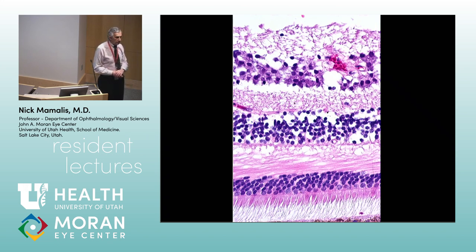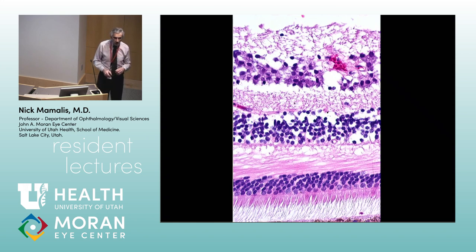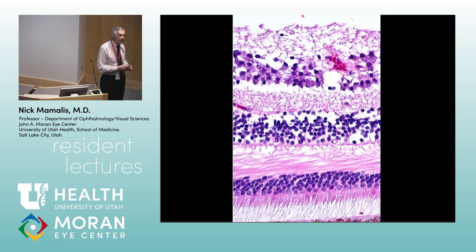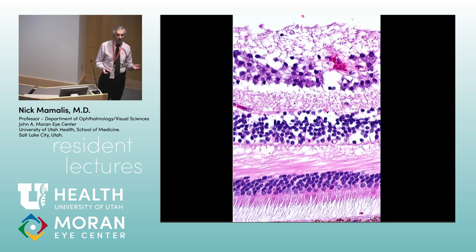Mueller cells are like microglial scavenger cells, but they also give structural support. Their cell bodies live in the inner nuclear layer but their processes extend all the way up and all the way down through the retina. There's also what some call the outer limiting membrane — near the cell bodies of the rods and cones and their inner and outer segments.